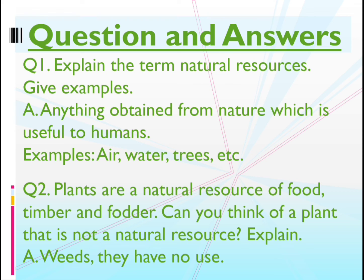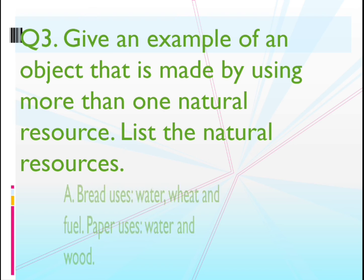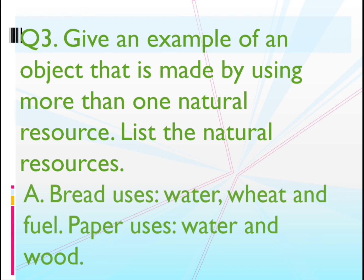Question 2: Plants are a natural resource of food, timber, and fodder. Can you think of a plant that is not a natural resource? Answer: Weeds — they are also plants but have no use. Question 3: Give an example of an object made using more than one natural resource and list those resources. Answer: Bread needs water, wheat, and fuel — three natural resources. Paper is made from trees and water — two natural resources.